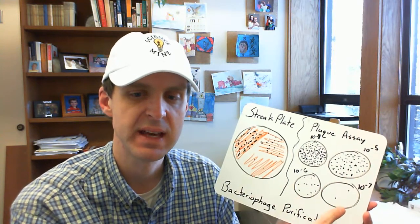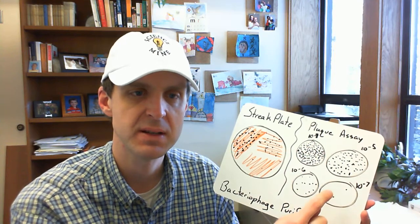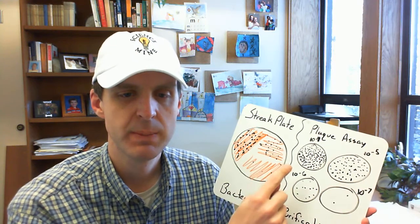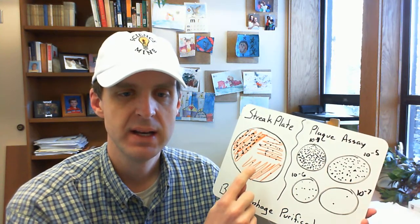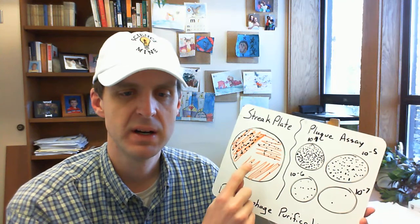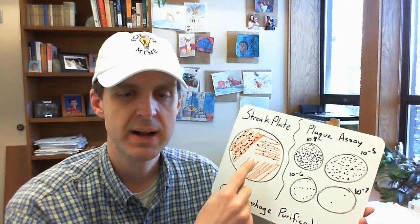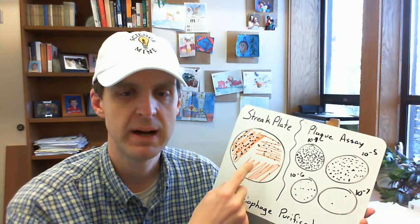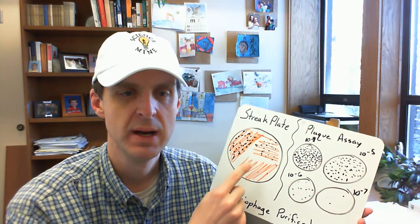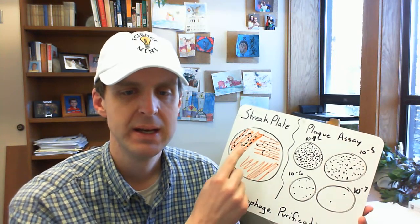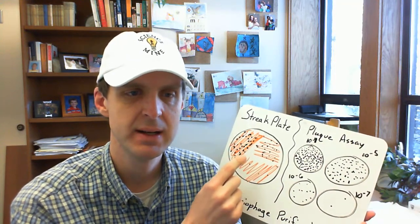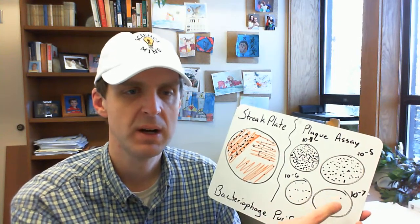All the virus in that plaque came from one virus to begin with, whereas over here it's possible that even though this is well isolated, it's possible that you turned your tip a little bit or whatever as you're dragging it through that last bit and maybe two, three, four, maybe ten viruses dropped off your pipette tip at this point and caused a plaque. So here you're only semi-confident that you have isolated a clonal population of virus, here you're far more confident.